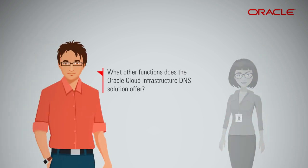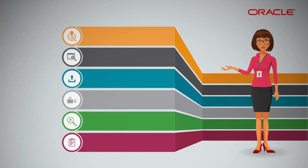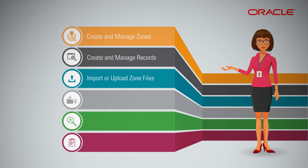What other functions does the Oracle Cloud Infrastructure DNS solution offer? The Oracle Cloud Infrastructure DNS solution offers a complete set of functions for zone management within the user interface, including: create and manage zones; create and manage records; import or upload zone files; save and publish changes; view, sort and filter views of zones and records; and reporting on total queries by zone and total queries by tenant.